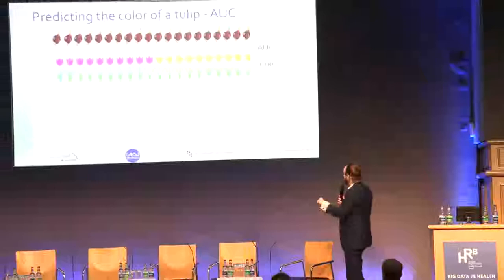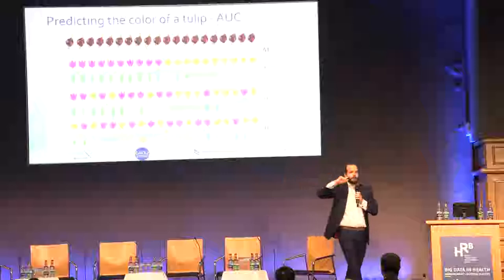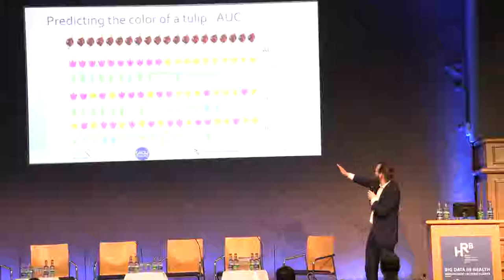If you're like me — I know nothing about tulips, I buy them for my wife sometimes — it will be 0.5. If you're somewhat of an expert, there's some signal: you see 0.72, more yellow on the right-hand side, more pink on the left-hand side, but it's not perfect.